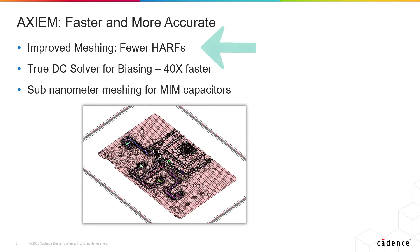We have improved meshing — there are fewer HARFs. A HARF is a high aspect ratio facet; think long skinny triangle. They're bad. They hurt your mesh and your simulation, and we have done a better job of getting rid of them. We also have true DC solver capability and better vertical resolution for MIM capacitors on chips. Let me go ahead and start by showing you that mesh.